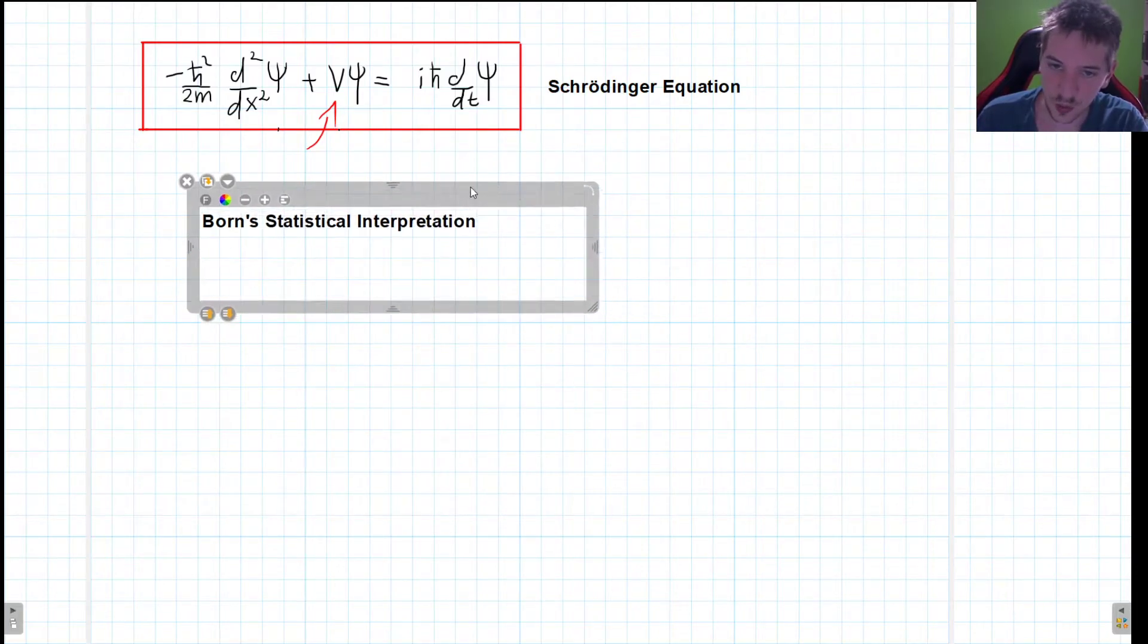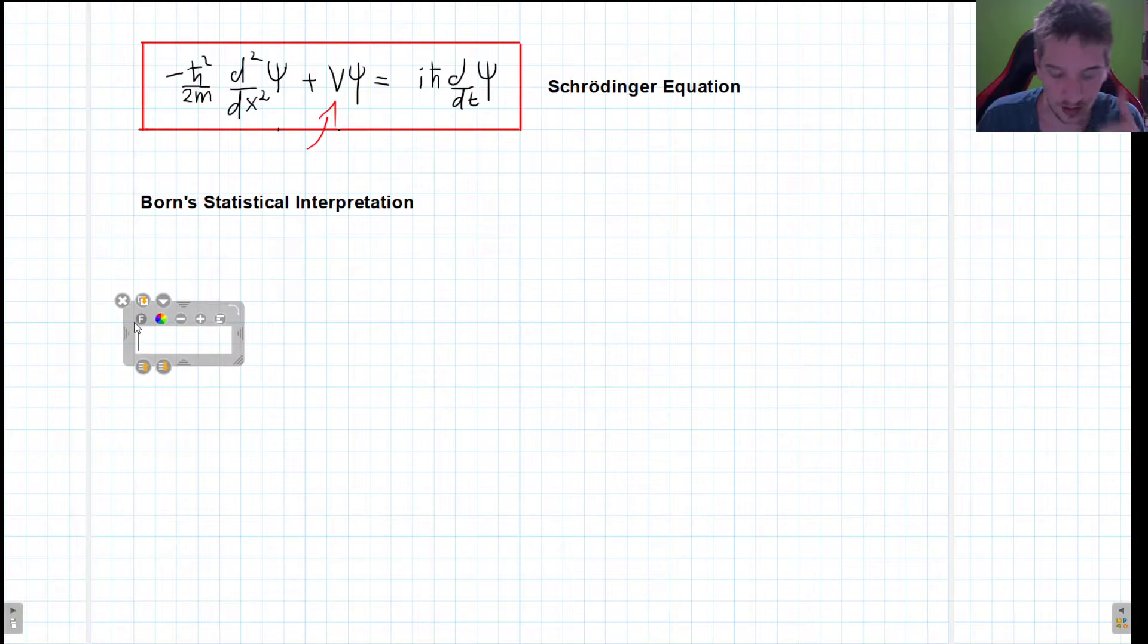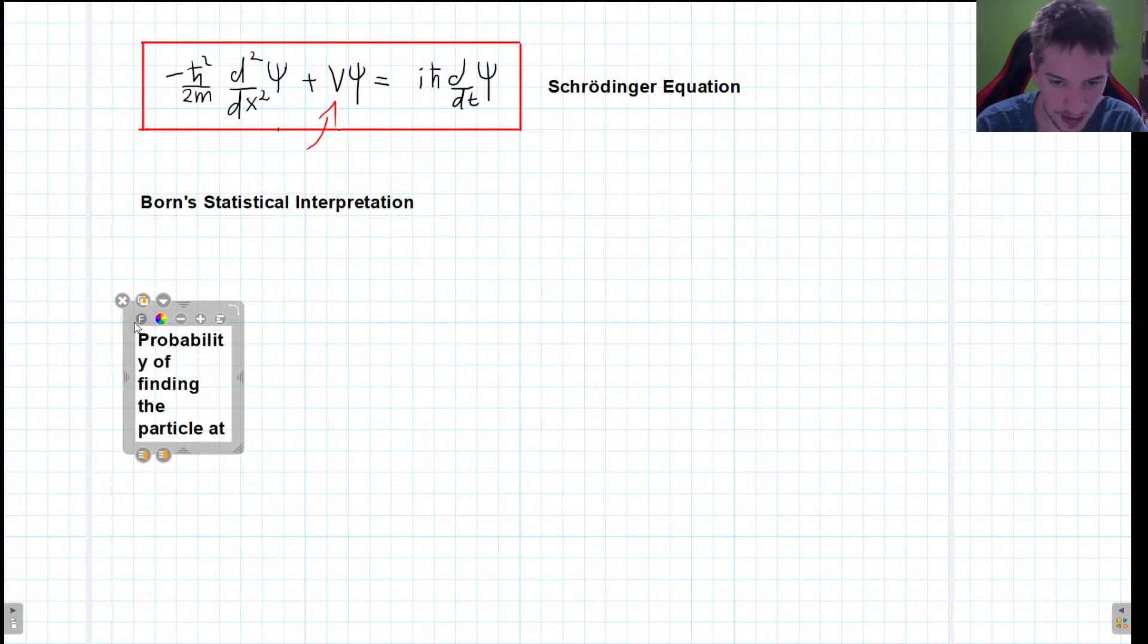And what this says is, I will also write it down: the probability of finding the particle at position x,